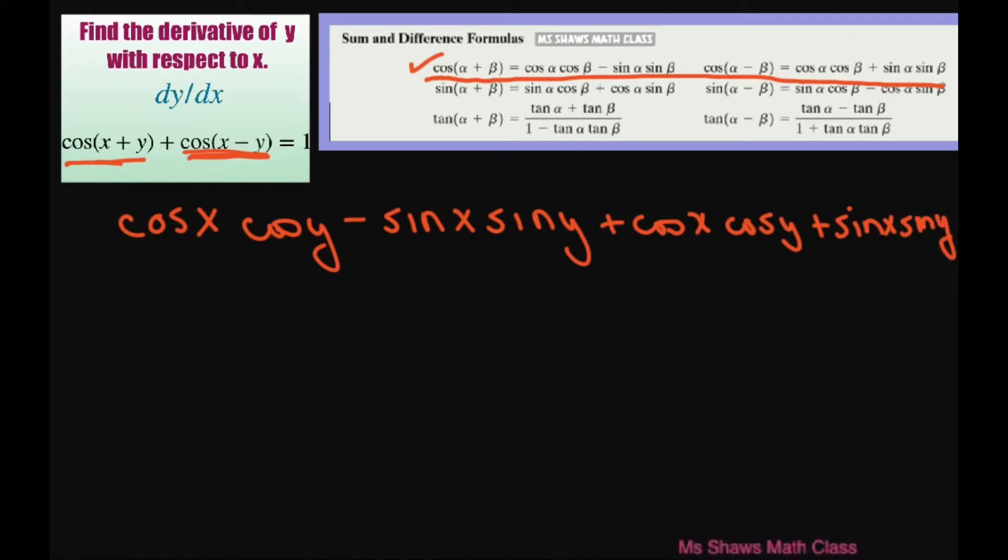Now that we have that, these two are going to cancel out. These two are the same. So now I can rewrite this as 2 cosine of x cosine of y, since there's two of them, equals 1.